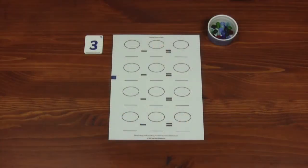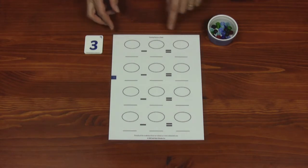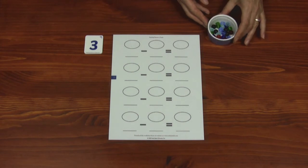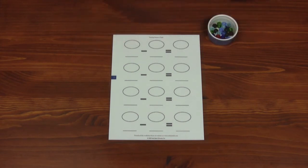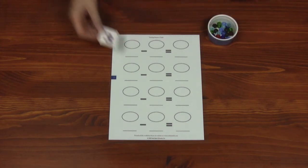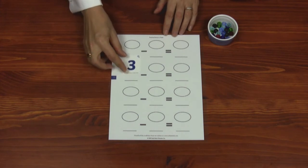For this subtraction exercise you need a worksheet, some number cards and a pot with some coloured beads. Place the number on the worksheet and put the same amount of beads in the space above the number. Three.